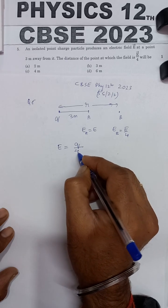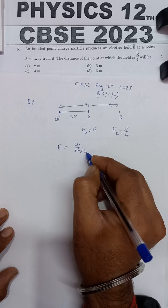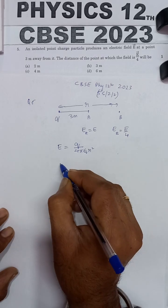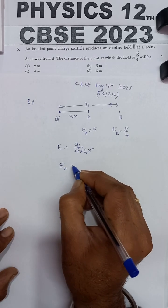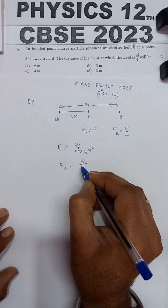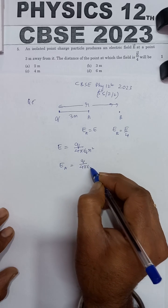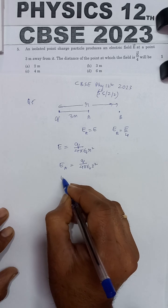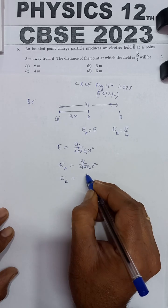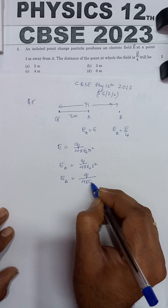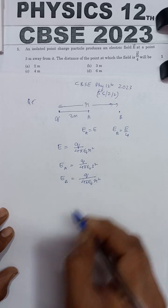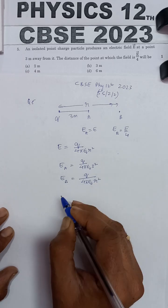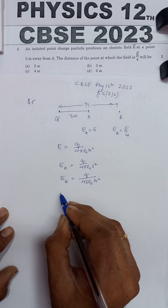The electric field is equal to Q upon 4πε₀r². Now substituting the values of EA and EB.